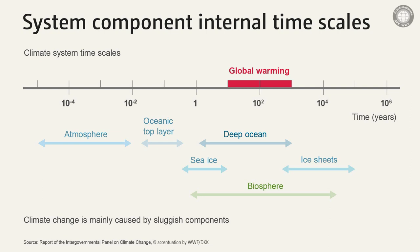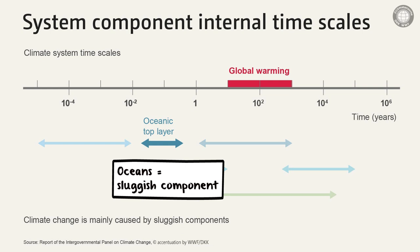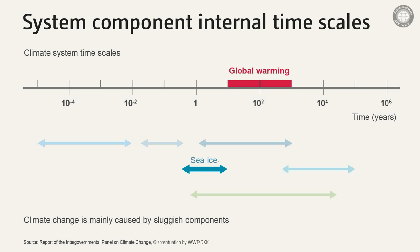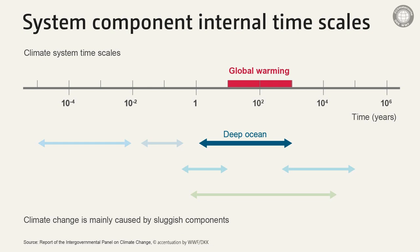Then we have the sluggish components of the climate system. First of all, the oceans with their different layers. The top layer, the well-mixed layer of the ocean, responds within periods of weeks, months, or maybe even a few years. Then we have a thin layer of ice that floats on the ocean — we call it sea ice — which also responds relatively quickly, over a period of months to a few years. And then we have the deep ocean. The ocean has an average depth of almost 4000 meters, a tremendous mass. This mass takes time to react, and that is why the deep ocean has a very long internal timescale of centuries to millennia.